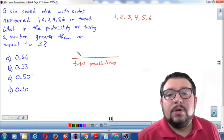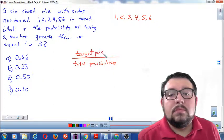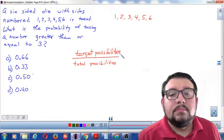And on the top, you're going to put the possibilities that you actually want. So these are your target possibilities. And then you simplify the fraction and you're done. So we're just going to use this formula for probability.